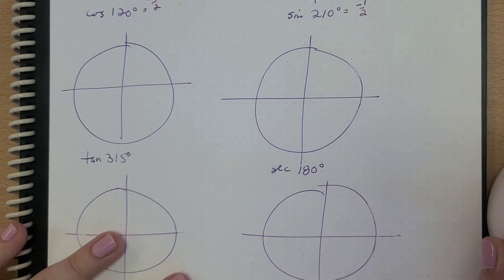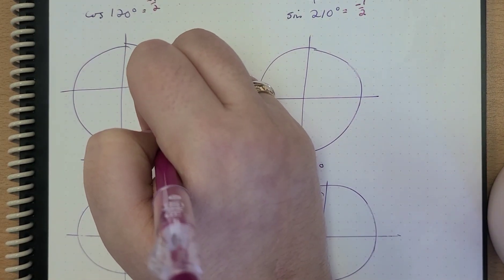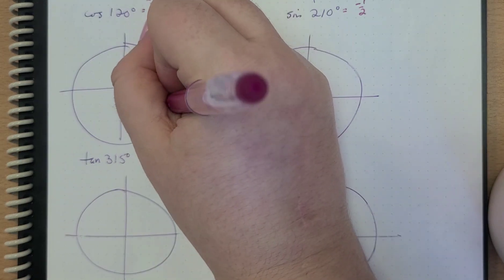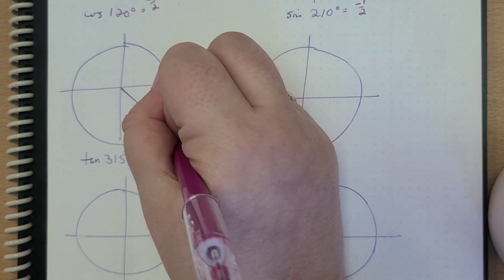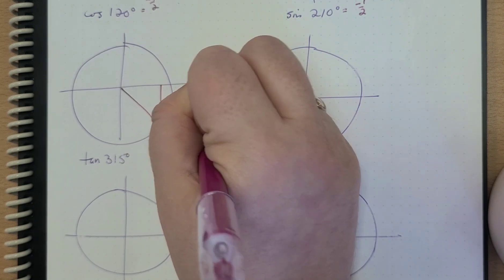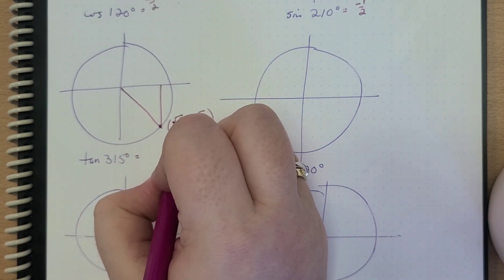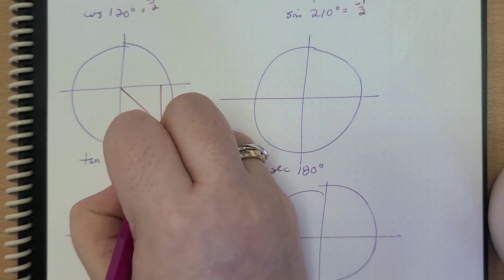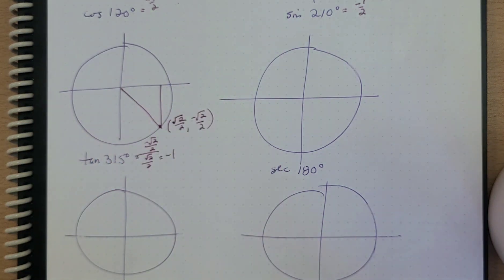Here we have the tangent of 315, which is going to be right here. So that's our 45-45-90 triangle. We know that this point is going to be (√2/2, −√2/2). So the tangent is going to be sine over cosine — that's (−√2/2) / (√2/2), which is just going to equal negative one.